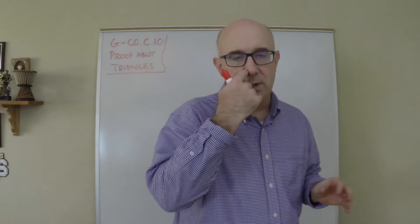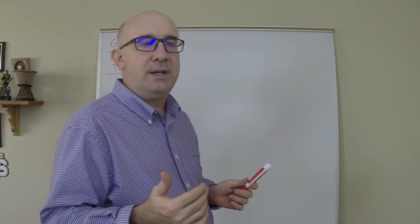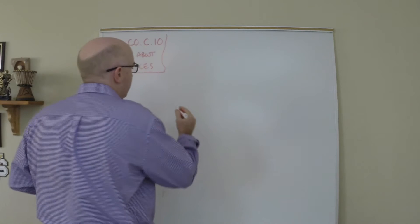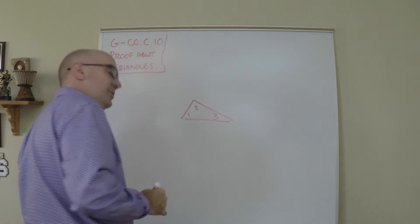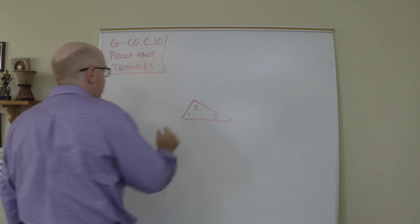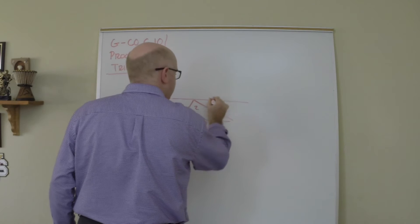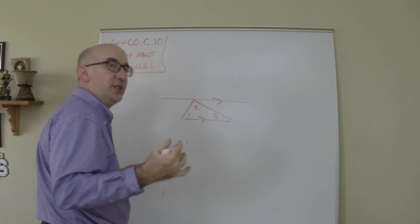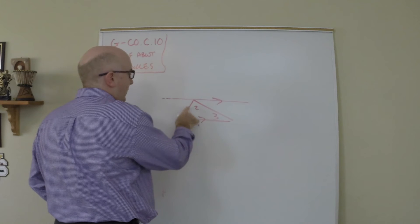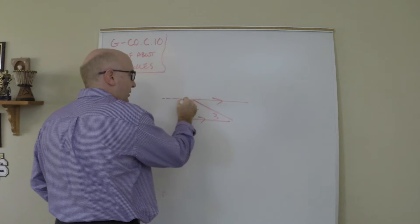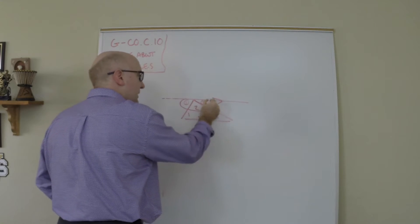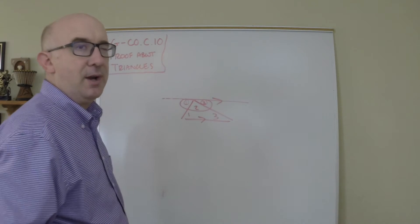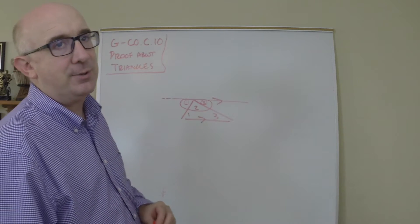Let me just give you a little bit of a window as to the idea of establishing the interior sum as 180. The classic proof idea is to show that 1, 2, and 3 add up to 180, and they do it by creating a parallel line to this one. The gist of the proof is to show that angle 1 has to be alternate interior here, angle 3 has to be alternate interior here, and because they all sit upon a straight angle, 1, 2, and 3 add up to 180.